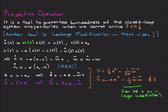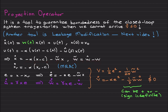Since we are considering a reference model based design — model reference adaptive control — here is the reference model from the previous video. Once you put this control signal into the system, you obtain this equation. W̃ is ŵ minus w, as you may remember from previous videos. Now I am writing the error dynamics: x minus the reference model state x_r.